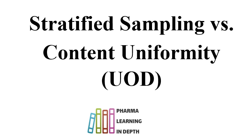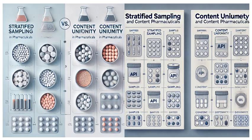Content Uniformity is also known as Uniformity of Dosage Units. Whether you are working on solid oral formulations, liquid oral formulations, or any other type of formulations, uniformity of dose should be there in each dose to be administered. This video will give you complete understanding about the similarities and differences between Stratified Sampling vs Content Uniformity or Uniformity of Dosage Units.